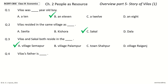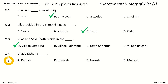Question 4: Vilas's father is dash. The options are: a) Parish, b) Ramesh, c) Naresh, d) Mahesh. And the answer is Mahesh. So Vilas's father is Mahesh.